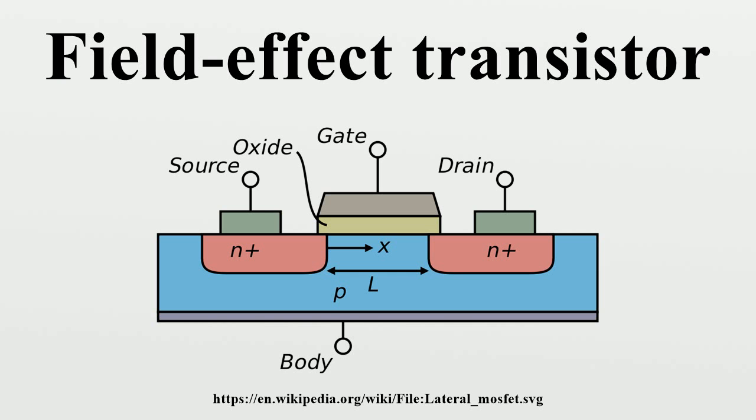It is a unipolar device, depending only on majority current flow. Because base current noise will increase with shaping time, a FET typically produces less noise than a bipolar junction transistor, and is thus found in noise-sensitive electronics such as tuners and low-noise amplifiers for VHF and satellite receivers.